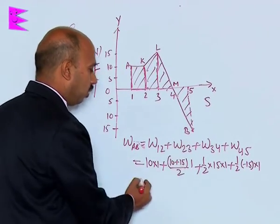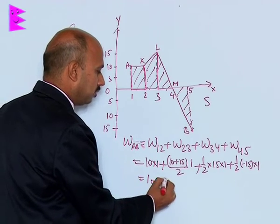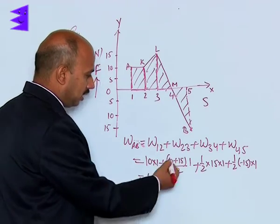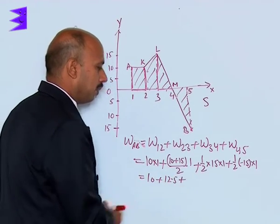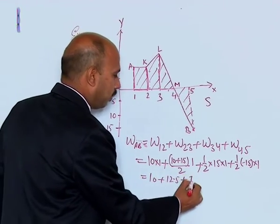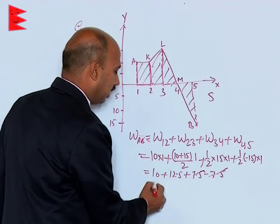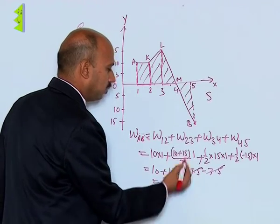Now we can just solve it. This is 10 plus 12.5 plus 7.5 minus 7.5 cancelled, and you will be getting 22.5 joule.